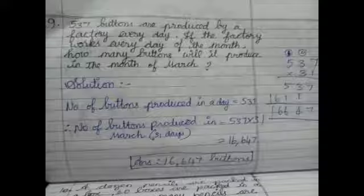Okay children, you can write it in the rough column and start with the multiplication which is a two digit multiplication. Carefully you have to write. And finally the answer will be 16,647 buttons. So one day they produce 537 buttons, in one month, that's the March month, they produce 16,647 buttons.